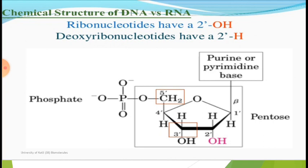A basic difference is that ribonucleotides have a hydroxyl group — on carbon number two of the ribose sugar there is a hydroxyl group present. But deoxyribonucleotides have two hydrogens on carbon number two, meaning both sides of that carbon have hydrogen present. Remember that when numbering carbons in a ring structure, the carbon on the right side of the oxygen is always labeled carbon number one, and numbering follows from there.